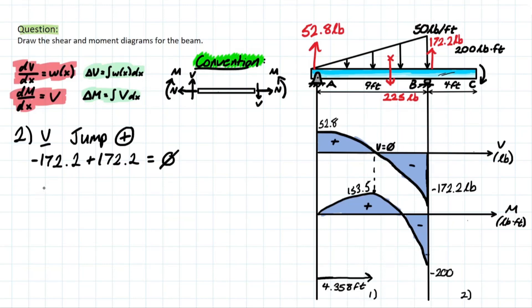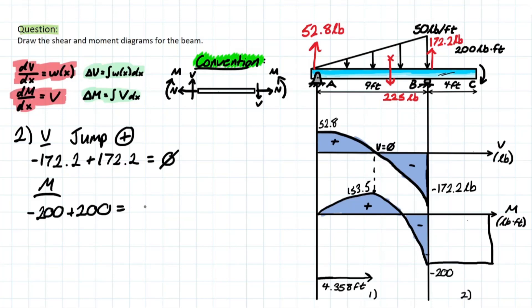Moving on to the moment section: since there is no area under the shear diagram in section two, there is no difference in moment either. So moment stays constant at −200 pound-feet throughout the span. However, the 200 pound-foot external moment applied at the end creates a jump, bringing the moment back to zero at the very end — that's −200 plus 200 equals zero.